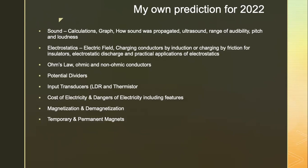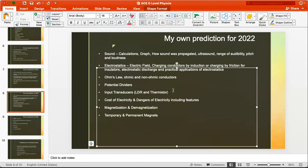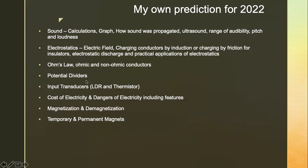For electrostatics, really understand and use the keywords appropriately — understanding is more important than memorizing. Remember that negative charges move, but not the positive charge; the positive charge is formed due to the movement of negative charge away. Ohm's law — ohmic and non-ohmic conductors. Make sure you know how to sketch the graph for a filament lamp and explain why it is a non-ohmic conductor — as current increases, more heat energy is released, resulting in increased resistance. Potential dividers and input transducers — both LDR and thermistor. Please pay attention to these, as they were not tested much last year. Potentiometer and input transducers may even appear in your practical.